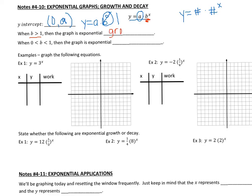That means that from left to right, the graph is going to be increasing. If b is between 0 and 1, then we say the graph is exponential decay. That means from left to right, the graph is decreasing.